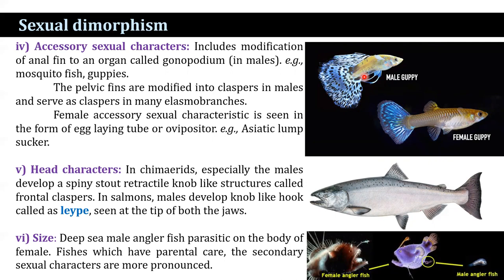Deep-sea male anglerfish are parasites on the body of the female. In fishes which exhibit parental care, the secondary sexual characters are more pronounced. Sexual dimorphism is less pronounced in fishes which do not exhibit parental care.